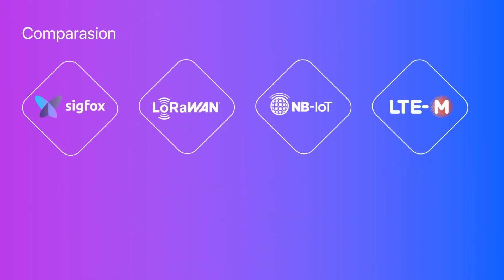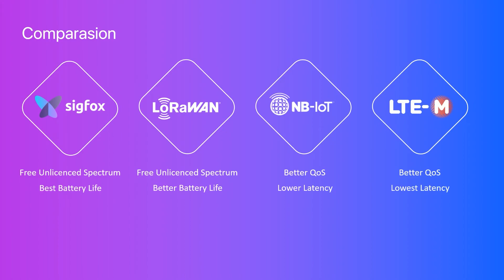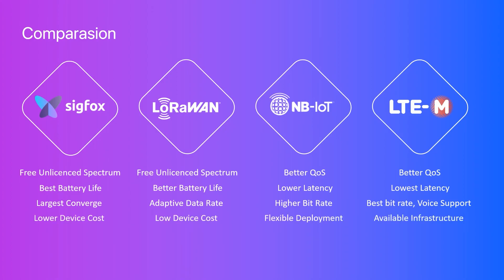To give a comparison of them: if you have a high requirement of quality of service, you should use NB-IoT or LTE-M as they run on a licensed spectrum. It would save you a lot of money if you use Sigfox or LoRaWAN as they are free. In terms of battery life, Sigfox performs the best, while NB-IoT devices give you low latency and LTE-M gives you the lowest. Sigfox also gives the largest coverage, NB-IoT supports higher bit rates, and Sigfox costs less on device costs. However, LTE-M reuses the existing 4G infrastructure.